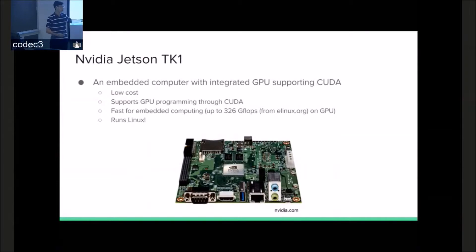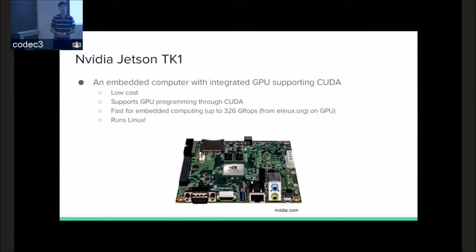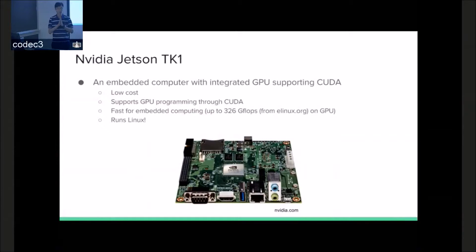We need to identify things in real time with periodicity because we're getting frames at some frame rate like 30 frames per second. On this platform we did work on the NVIDIA Jetson TK1, which is low cost, very powerful for its size, at up to 326 gigaflops on the GPU, which is definitely sufficient for certain image tasks. And in particular it runs Linux.